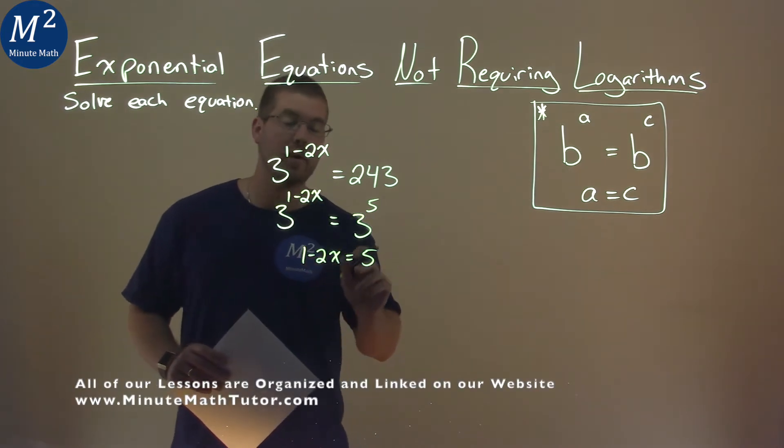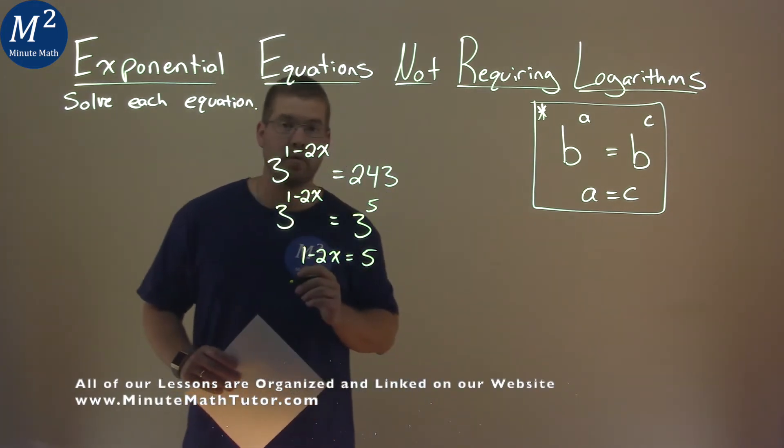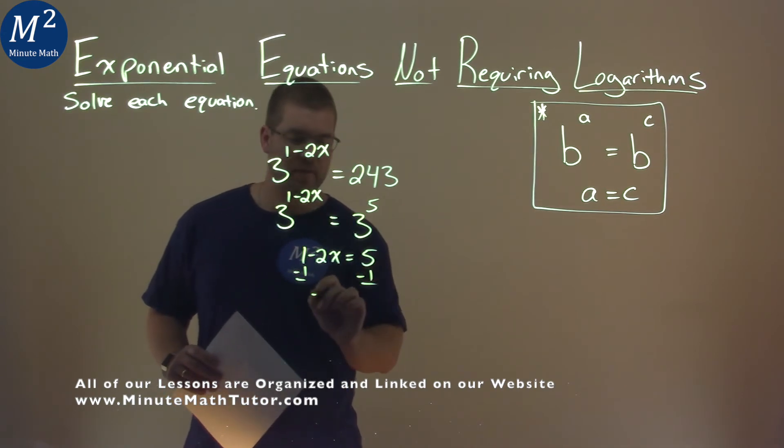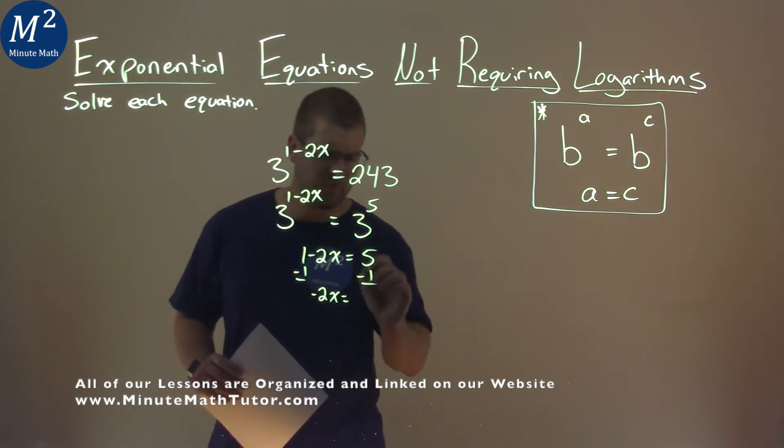So I have 1 minus 2x equals 5, and let's solve for x here. I'm going to subtract the 1 to both sides here, and I have negative 2x equals 5 minus 1, 4.